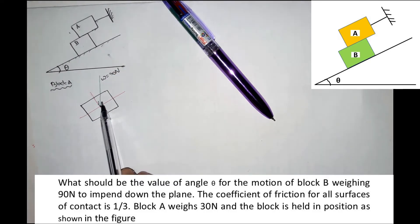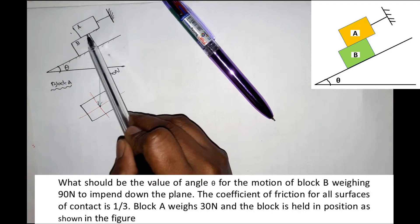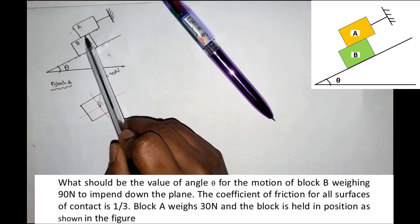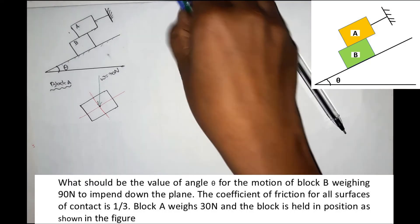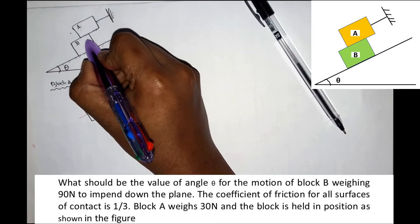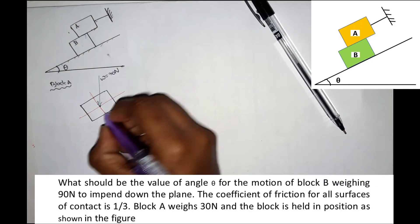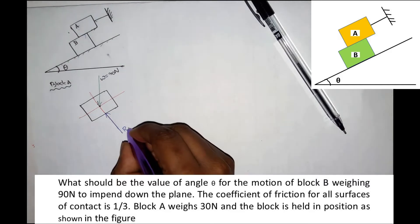Now I have marked the weight. If you have a contact surface, it has a reaction to the surface. If block A is in contact with block B, there is a reaction. The reaction is perpendicular to the surface, and this reaction is called Rn1.